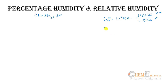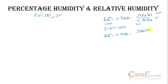The dry bulb temperature is 50°C = 323 K. Substituting: log(P_vapor) = 11.96481 − 3984.923 / (323 − 39.724), which gives a vapor pressure of 0.12215 bar.